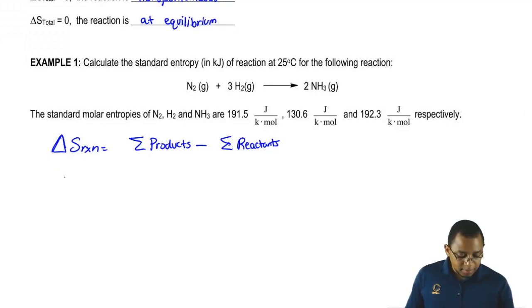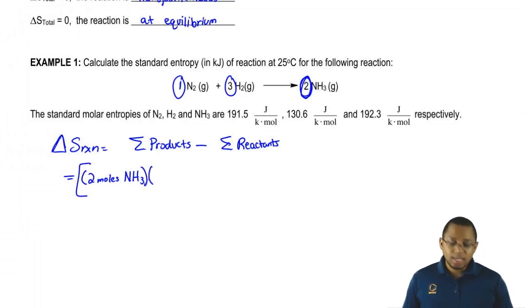Here we're going to say it equals, we have, remember the coefficients 2, 3, and 1. According to our balanced equation, we have 2 moles of NH3. Each NH3 is this total right here.